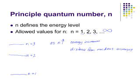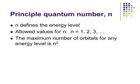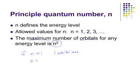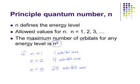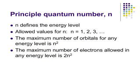We can also get some other information based on the value of n. If we know the principal quantum number, we can calculate the maximum number of orbitals for that energy level, and that's equal to n². So if you are in the first energy level where n=1, the maximum number of orbitals is 1. In energy level 2, the maximum number of orbitals is 4. In energy level 5, the maximum number of orbitals allowed is 25. You don't necessarily have all of them, but they theoretically can exist — these are all solutions to giant math problems.